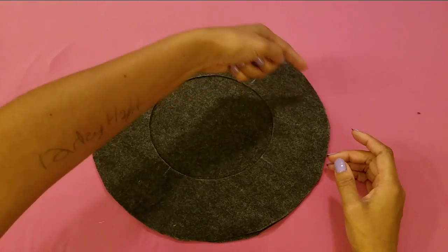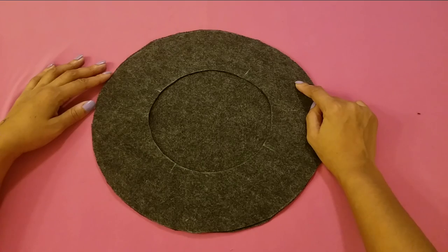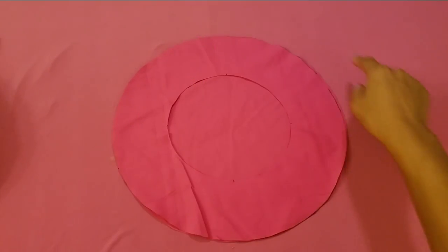With the right sides together, sew around the circumference of your circle with a 1/4 inch seam allowance. Repeat that on the lining as well.